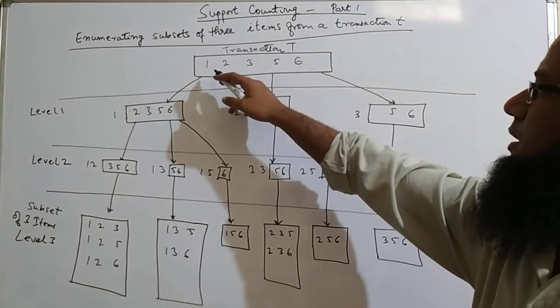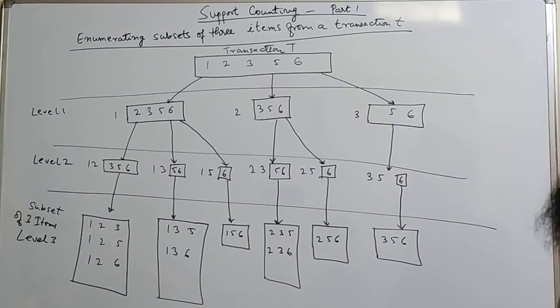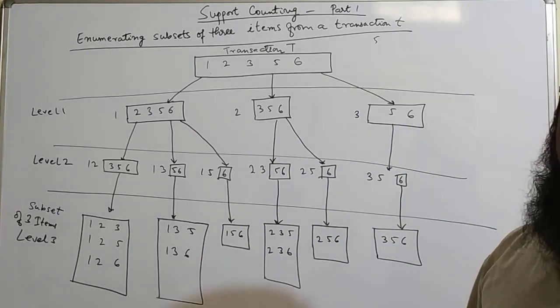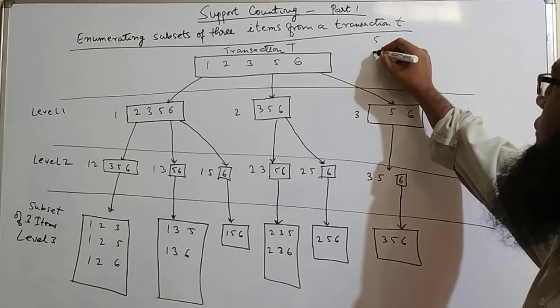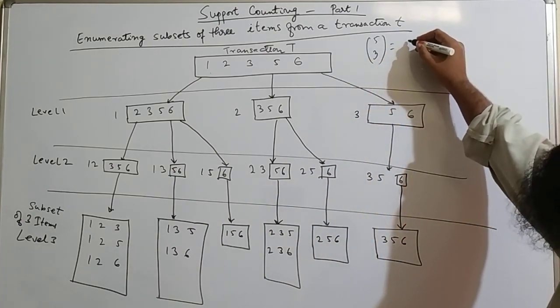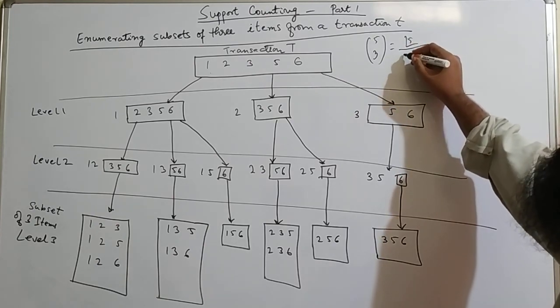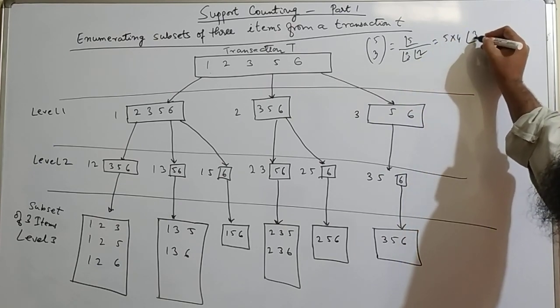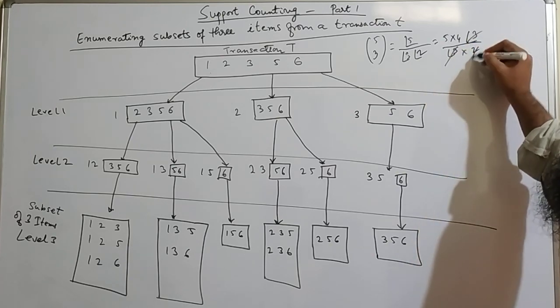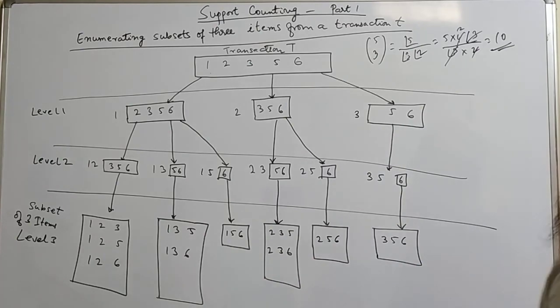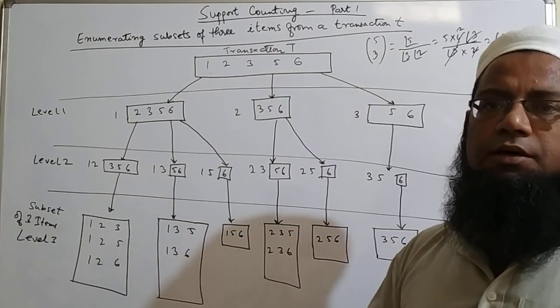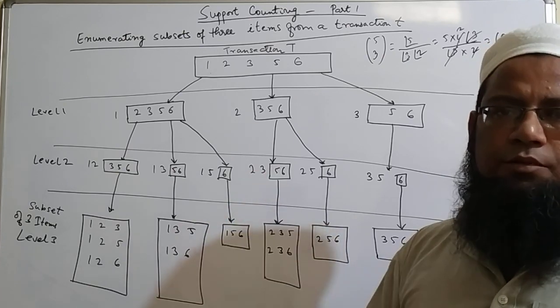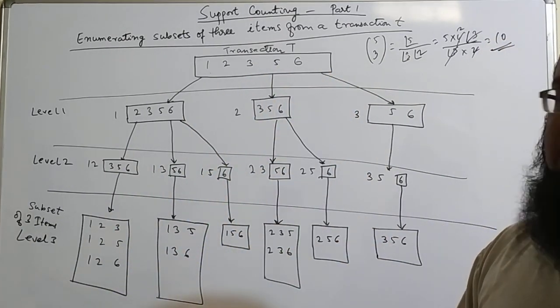we have already numbered the items which were in words like ball as one. So here transaction T has one, two, three, five, six. And we need to find, so there are how many items are there? There are five items and we need to find a candidate with three itemset. So here it is the level wise. So we'll go to the first level. We'll choose one item from these five items. Let's see how it is done.